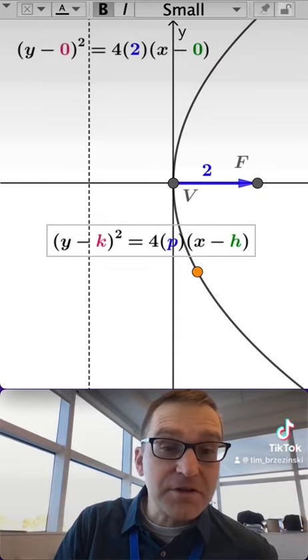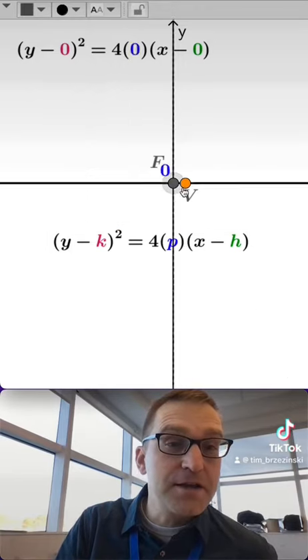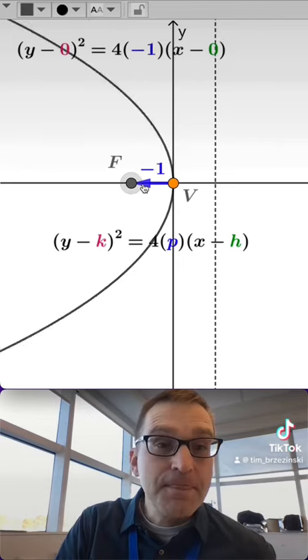Notice that that's how it looks. So here opens right, and here we have opening left when P is negative.